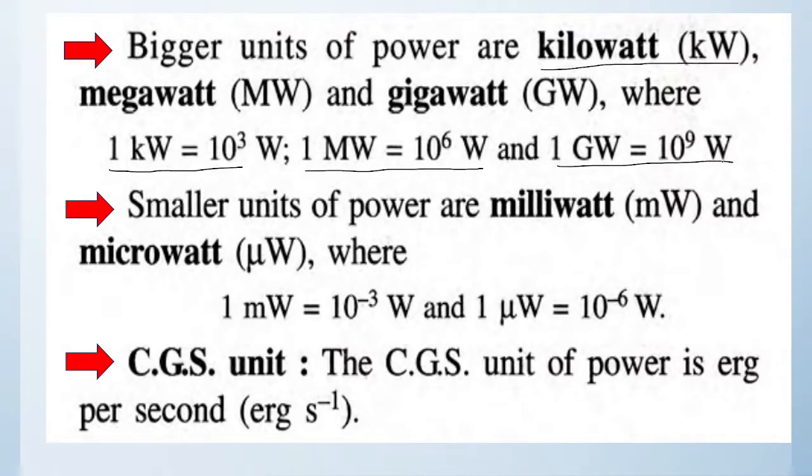For smaller units of power, we use milliwatt and microwatt. In daily life, we don't produce work in gigawatt or megawatt through our body. These smaller units like milliwatt and microwatt are used for devices like watch cells and small toy batteries.